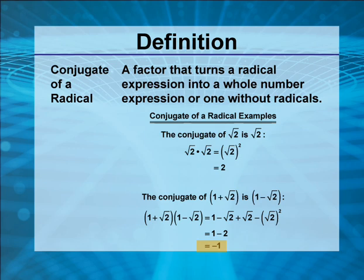So you can see that multiplying 1 plus the square root of 2 by its conjugate gets rid of all the terms under the radical.